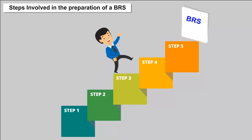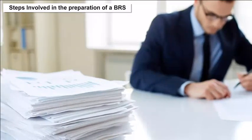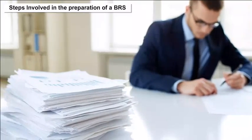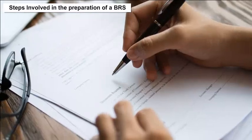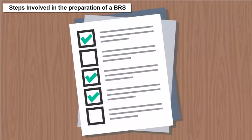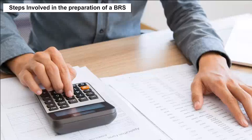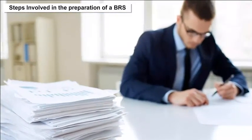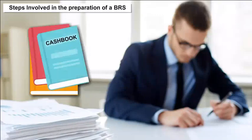Steps involved in the preparation of a BRS: When the bookkeeper receives the bank statement, he first checks all entries in the cash book for that period against the bank statement. All items appearing in both the cash book and the bank statement are ticked or check-marked. For items not ticked, the bookkeeper needs to know the nature and detail of each item. The bookkeeper then writes up the cash book by entering items that appear on the bank statement but not in the cash book. The cash book is then balanced to get the adjusted cash book balance.